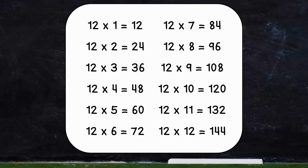12 times 2 equals 24, 12 times 3 equals 36, 12 times 4 equals 48, 12 times 5 equals 60, 12 times 6 equals 72, 12 times 7 equals 84, 12 times 8 equals 96, 12 times 9 is 108, 12 times 10 equals 120, 12 times 11 equals 132, 12 times 12 equals 144.